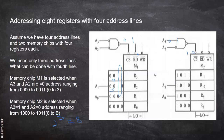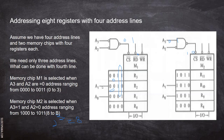Now we will see addressing eight registers with four address lines. We have eight registers. When we have more address lines but fewer memory locations, we need to handle the extra address lines. A naught and A one are mainly used for selecting between the four registers. Then these two bits — A2 and A3 — are used for selecting the chip.